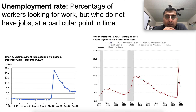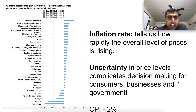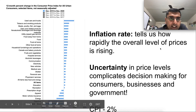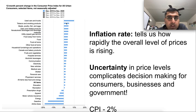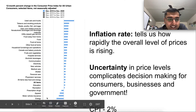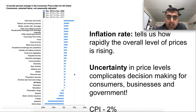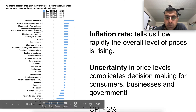The inflation rate tells us how rapidly the overall level of prices is rising. Looking at data from December 2019 to December 2020 from bls.gov, you can see it broken down by item — used cars and trucks actually got costlier, airline tickets dropped about minus twenty percent, gasoline got cheaper. Overall, the CPI inflation rate we have is about two percent.